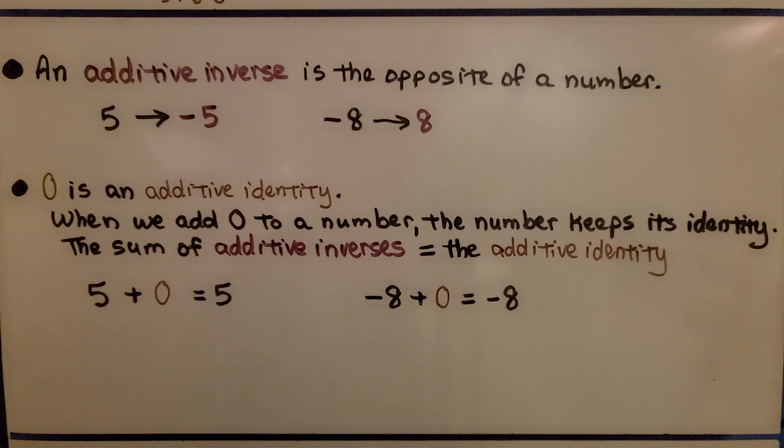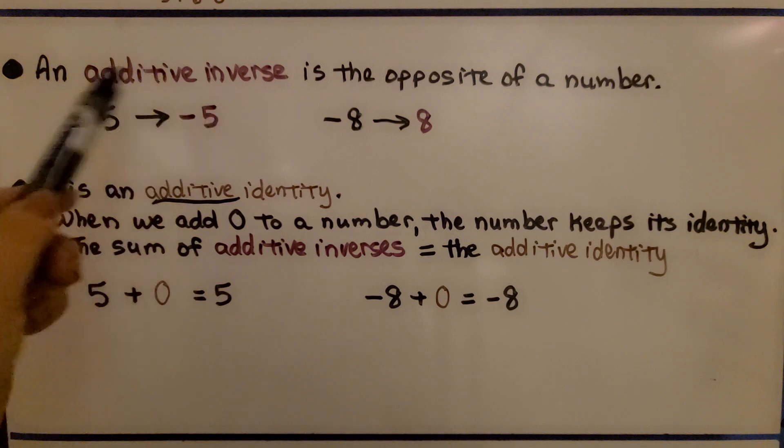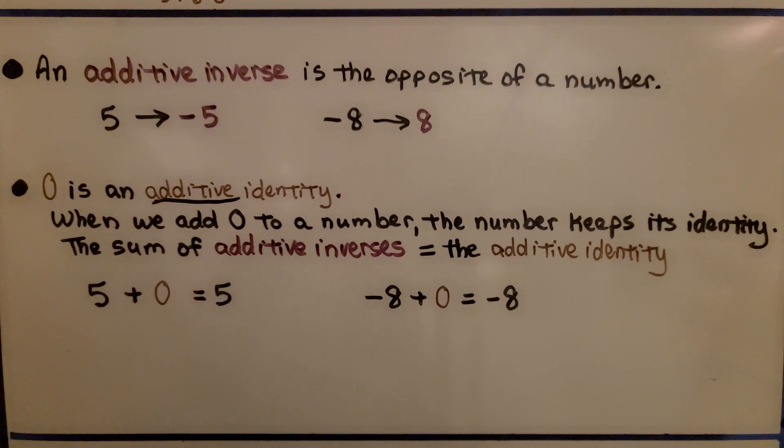Now, for additive identity, 0 is an additive identity. Notice it says additive because when we add 0 to a number, the number keeps its identity. The sum of additive inverses of 5 plus a negative 5 is going to equal the additive identity, 0. So, 0 is an additive identity because if we add it to 5, 5 is going to keep its identity. If we add it to negative 8, negative 8 is going to keep its identity. So, do you see how the sum of the additive inverses is equal to that additive identity, 0?